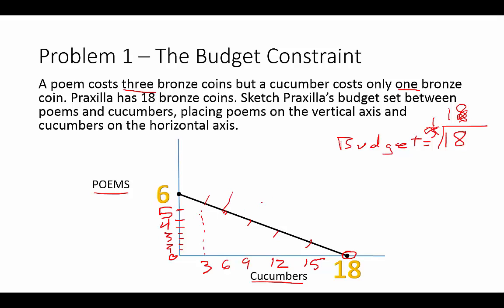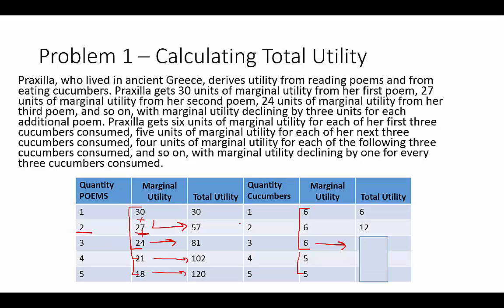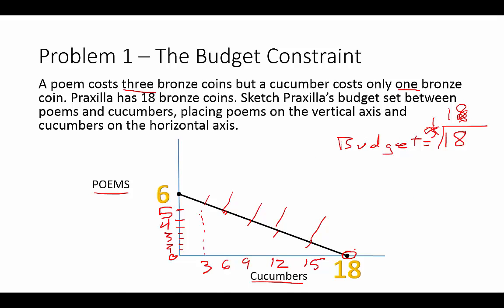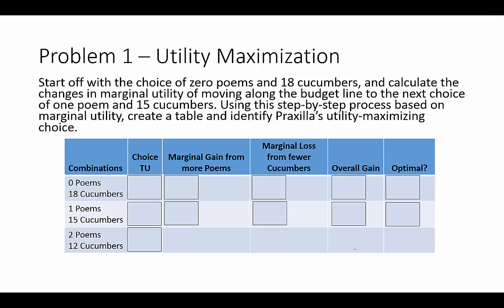We can go back to our total utility table and add up combinations. For example, at 5 poems we have a total utility of 120, and we can only consume 3 cucumbers. We add those together for the combined total utility. We'll need more options for cucumbers in that total utility table so we can combine them — we'll do that next. This is our budget constraint, and now we'll start talking about utility maximization.